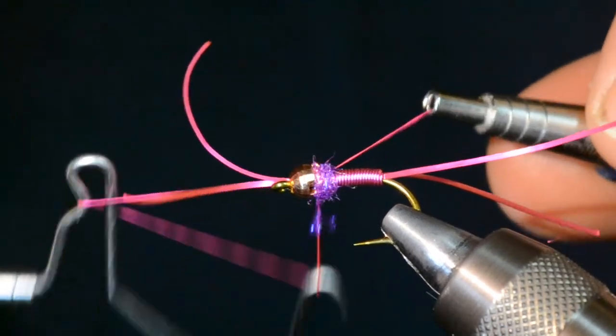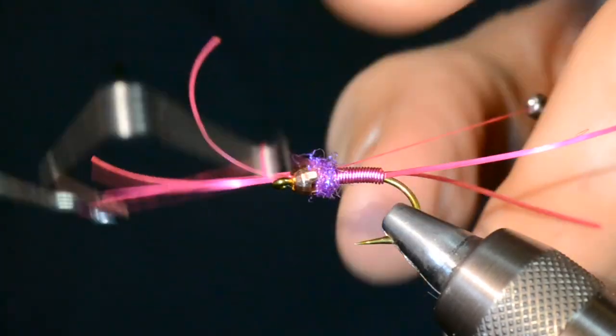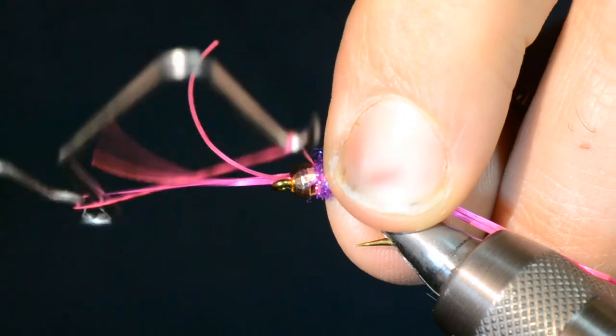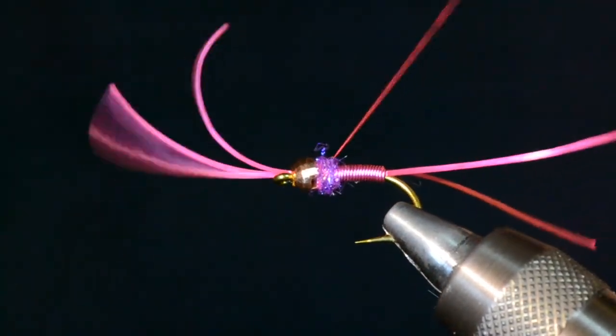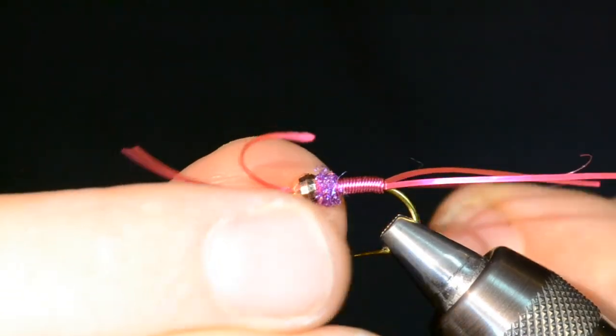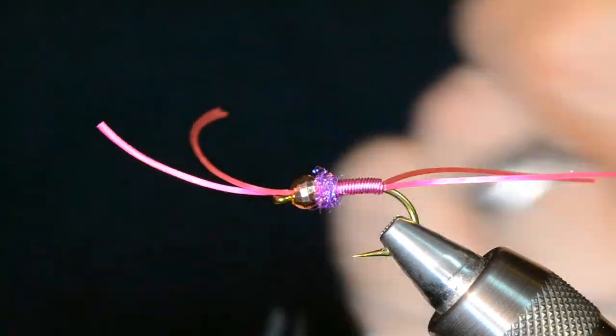So I'm just making a whip finish with my thread that I just dubbed right about there. I'll throw one additional wrap there. Good. I like the looks of that. That is it. That is the hot pink heavy metal worm.